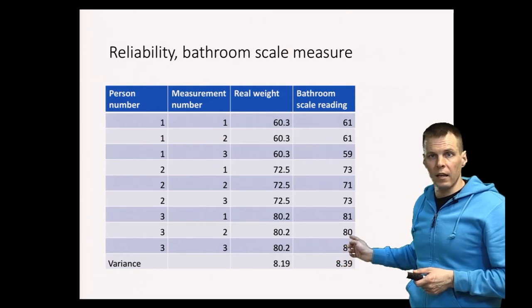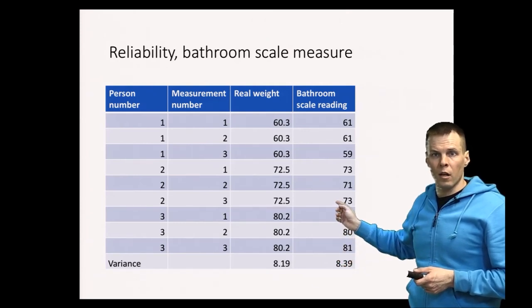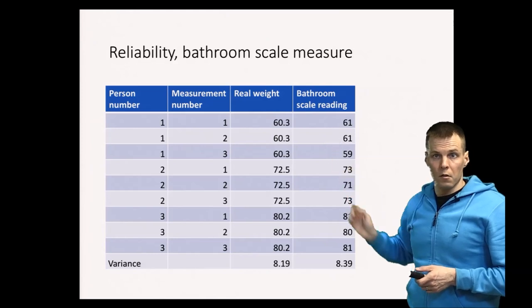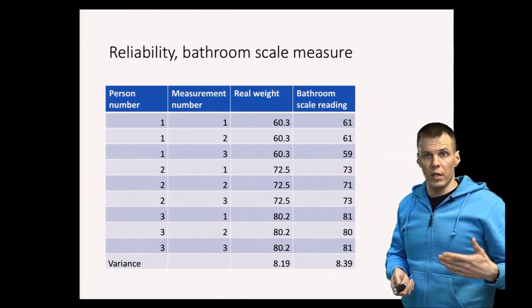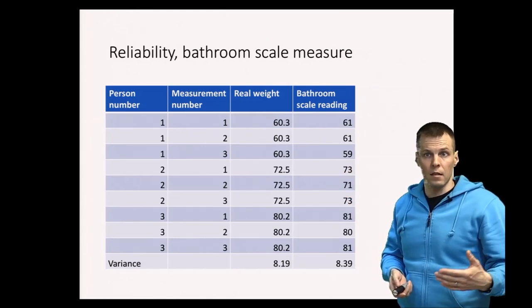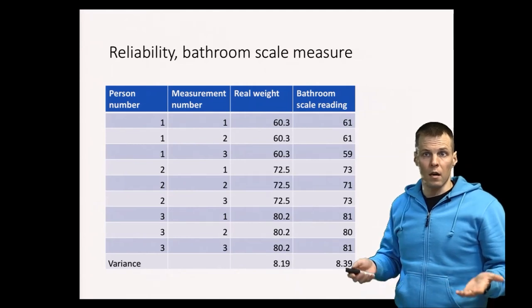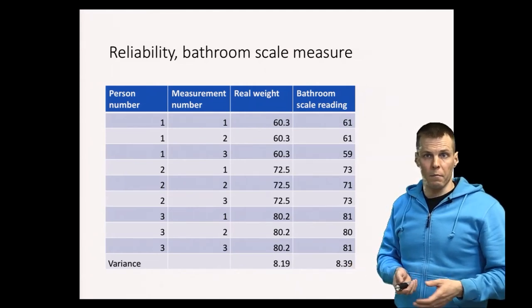You can compare the values. These are about 80 all the time, these are all the time about 70, and these all the time about 60. So it is very easy to check which of these persons is the heaviest based on this scale. So it's sufficiently reliable for this sample.